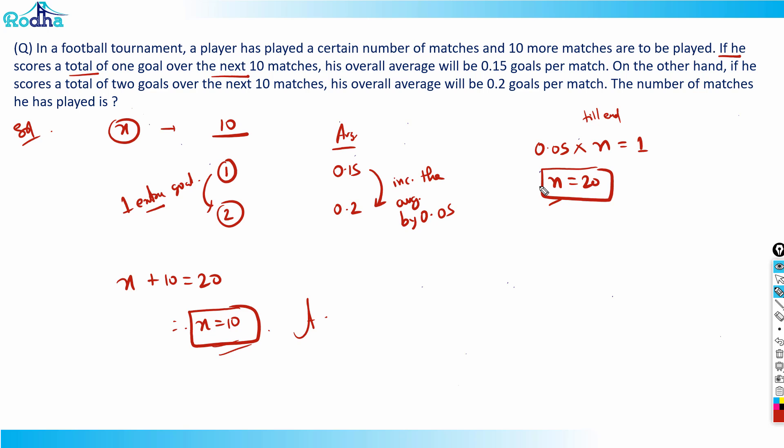N is the number of matches till end because he has played a certain number of matches and 10 more matches are to be played. This is the hypothetical situation. The actual number of matches he has played is 10, so 10 is the answer for this question.